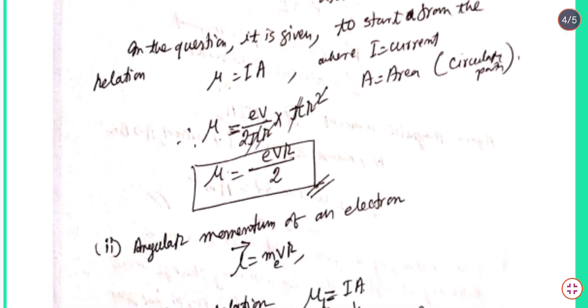The angular momentum of the electron is L = mvr. Using this, we can express the magnetic moment in terms of angular momentum.